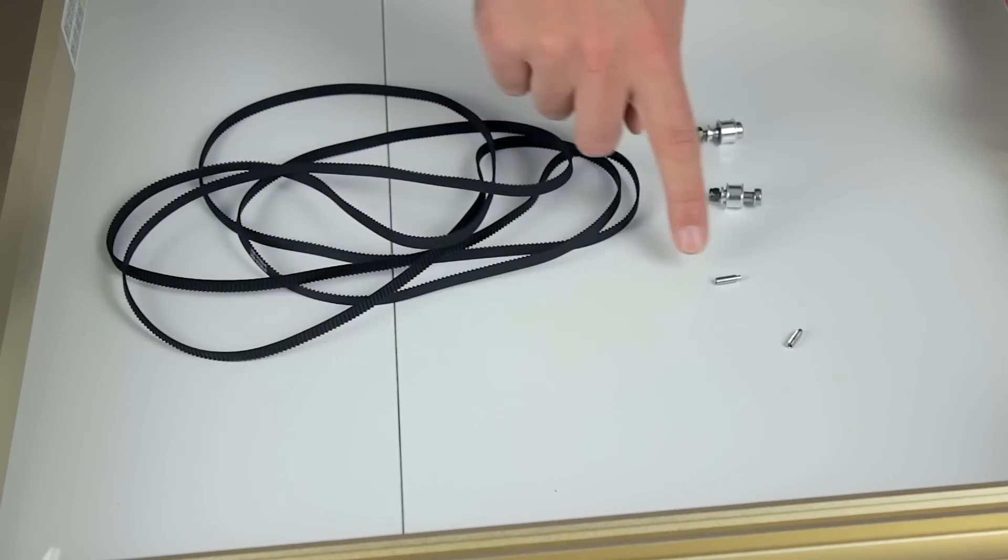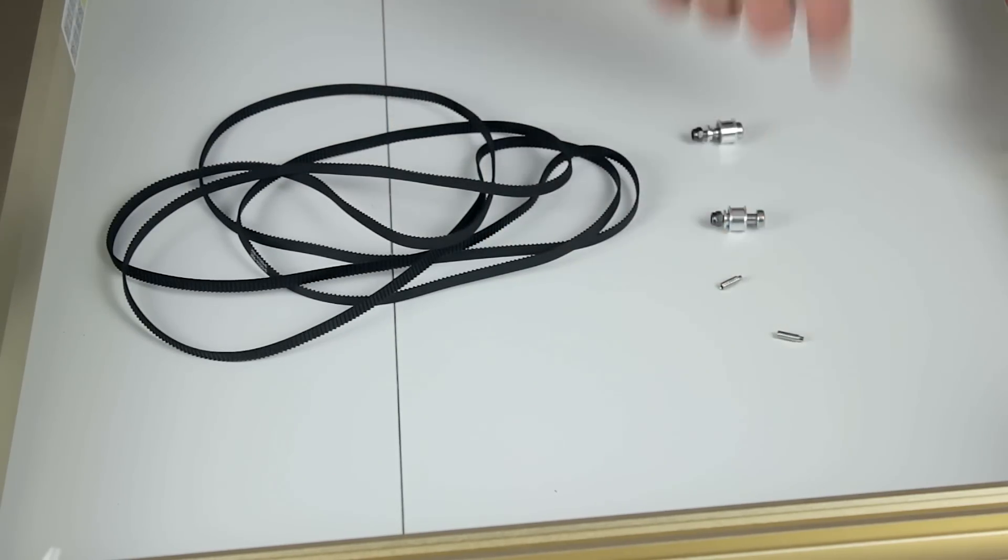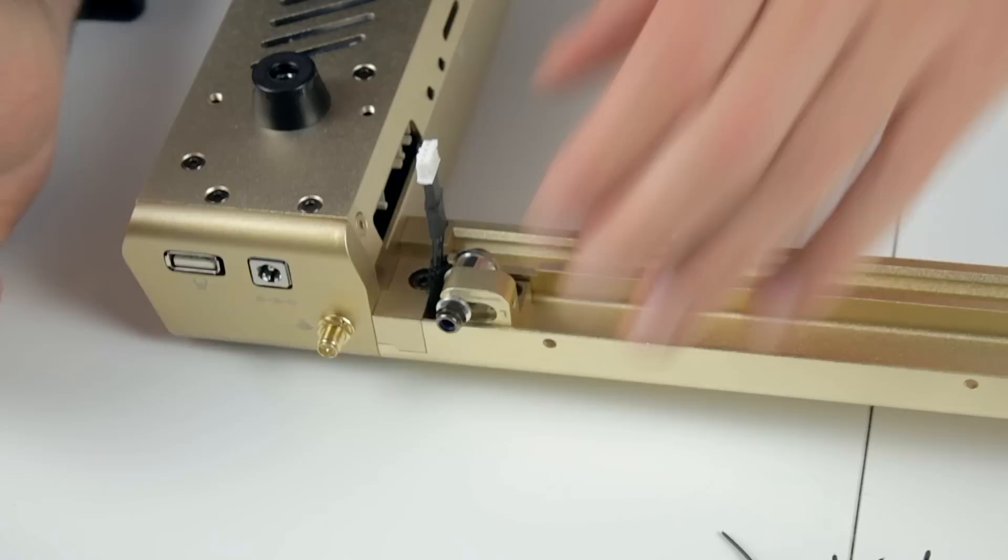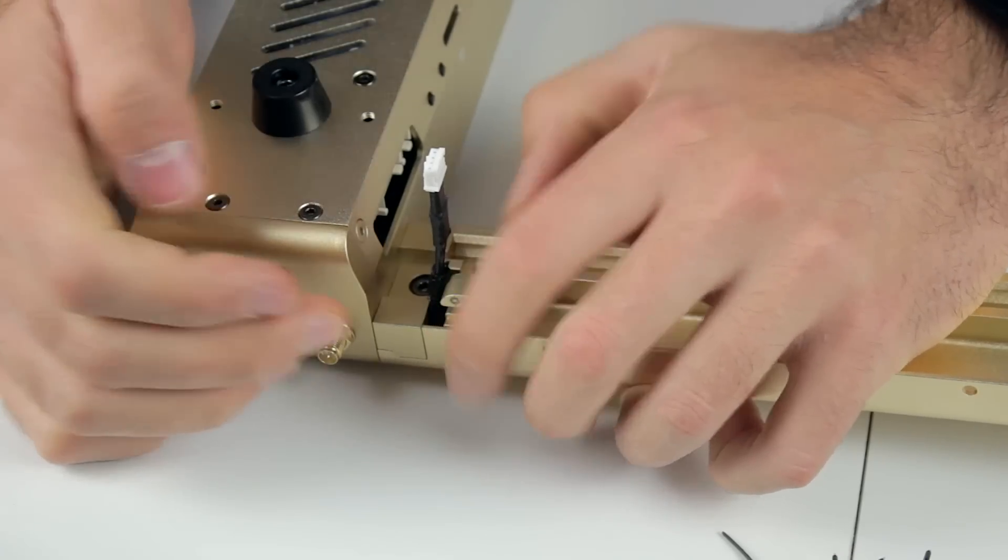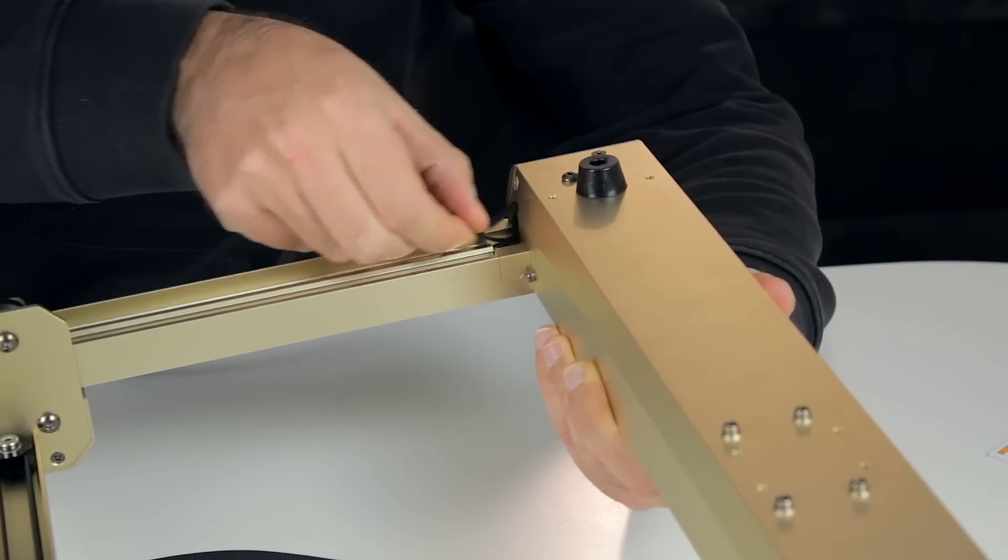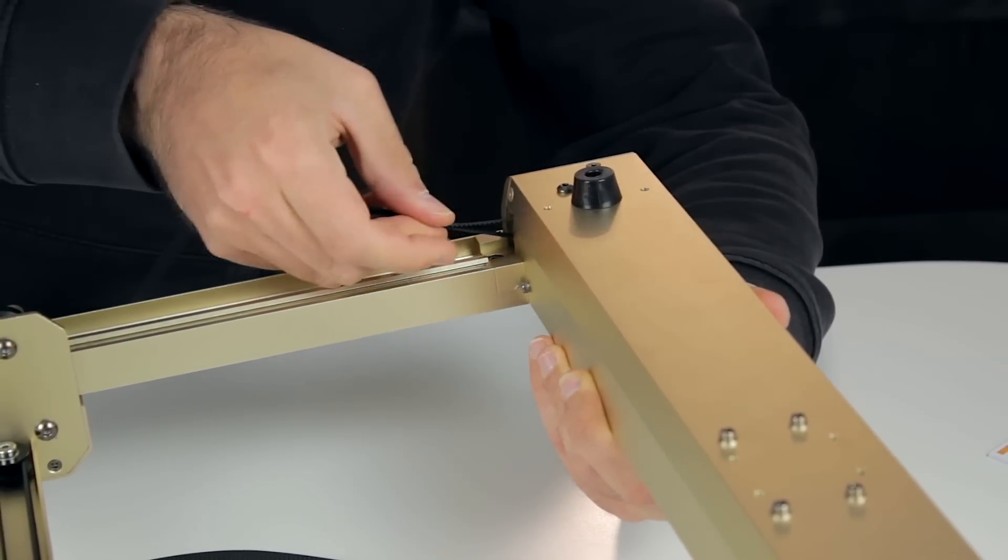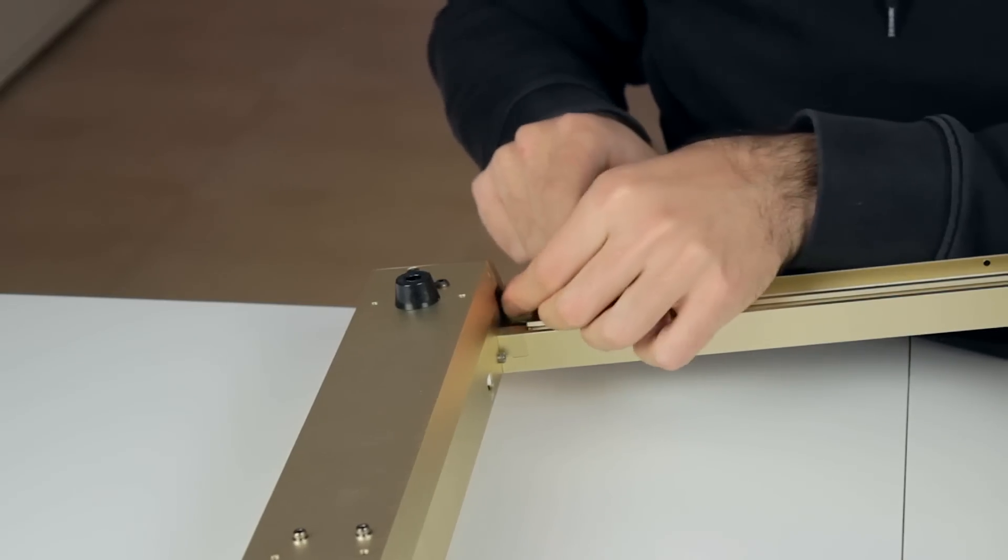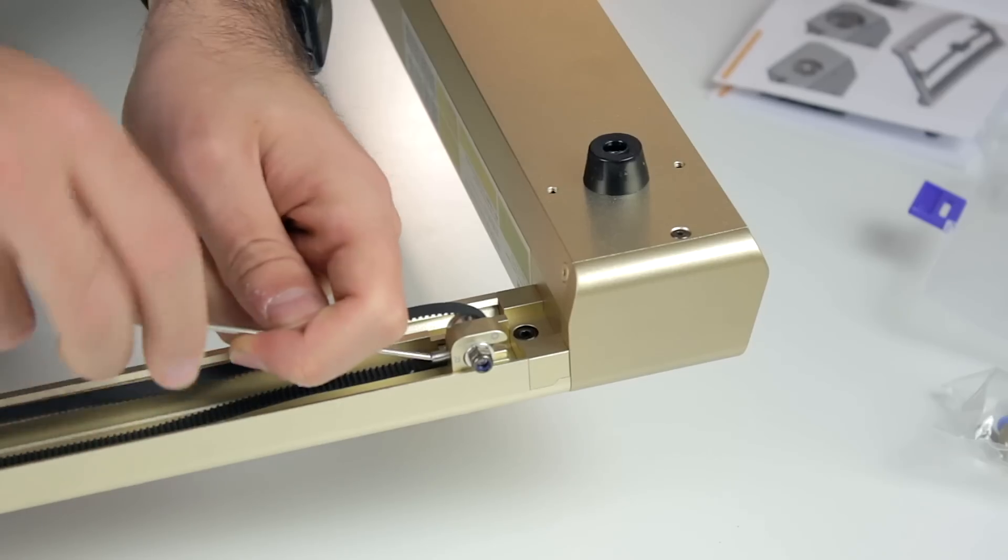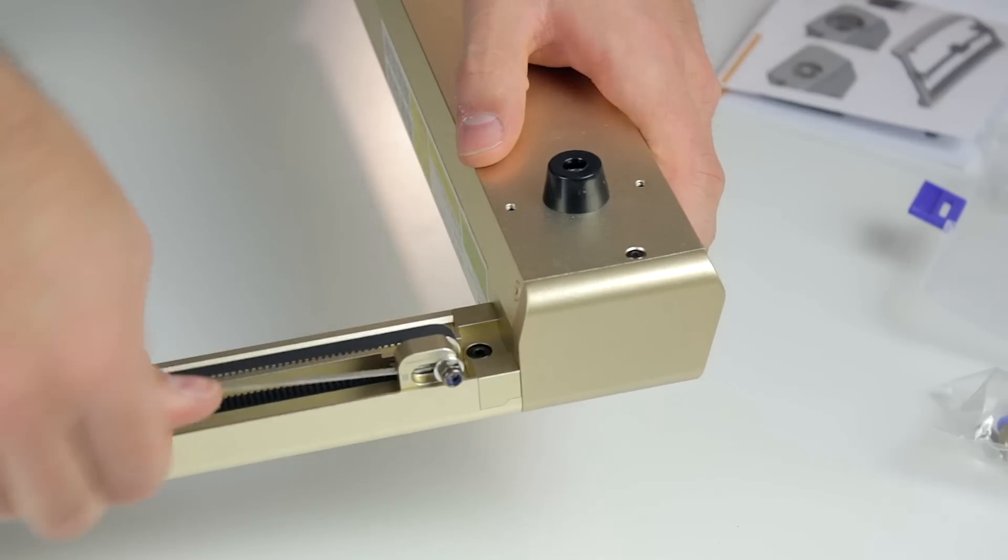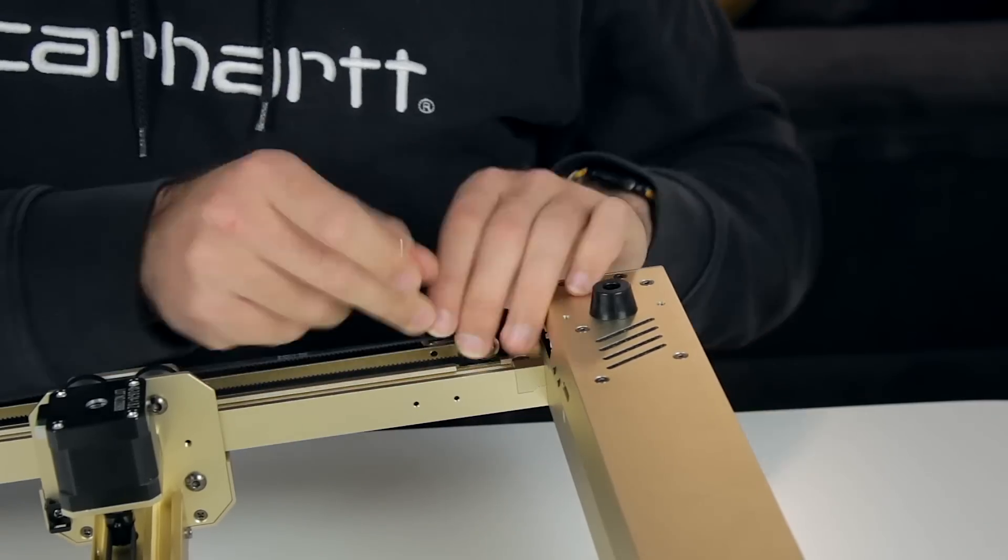Next we'll need the belts, idlers, and threads. First we'll insert one of the idlers in place, and once we have it, we'll continue with the one on the other side. Once in place, we'll tighten the bolts. Next we'll insert the timing belts through the pulleys of the motors inside the black profile of the machine, and then the other ends through the idlers we just installed. The last step will be to install the tensioners in place on both sides and later tighten them till we have enough tension on the belts.